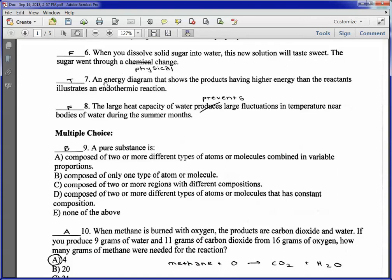Number seven, an energy diagram that shows the products having higher energy than the reactants. It illustrates endothermic reaction. That's true. You're absorbing energy. That's great. And I showed a diagram in my silent film. Hope you enjoyed it.